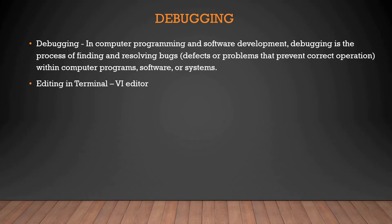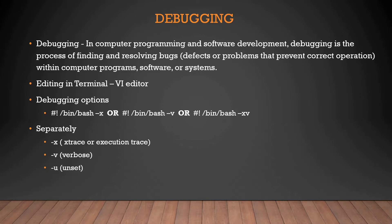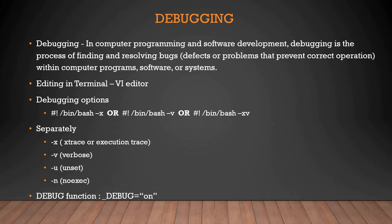Today we'll be editing in the terminal using the vi or vim editor, though there are many editors like nano as well. We're going to cover the debugging options: shebang hyphen x (xtrace or execution trace), hyphen v (verbose), hyphen xv combined, hyphen u (unset), hyphen n (no exec), and finally the debug function.